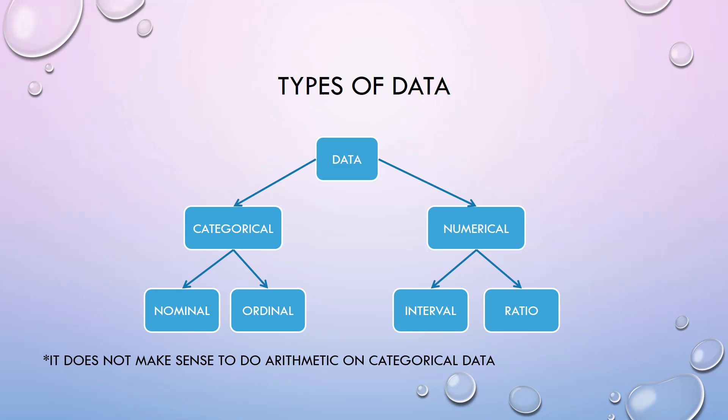Categorical data has two subcategories: nominal and ordinal. Numerical data is classified into interval and ratio subcategories. The basic distinction between these two types of data is that regular arithmetic calculations can only be used with numerical data.